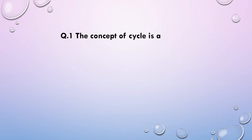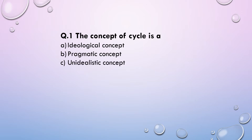First question: The concept of cycle is — (a) an ideological concept, (b) a pragmatic concept, (c) a realistic concept, or (d) none of these. Among the four options, the answer will be 'ideological concept.' This is a very important question.